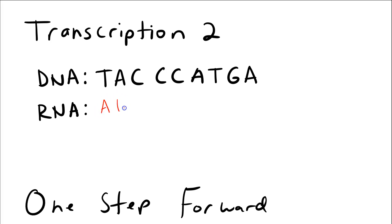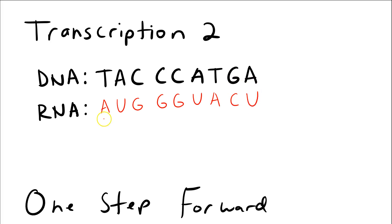Continuing through the sequence: A pairs with U, C pairs with G, C with G, C with G, A with U, T with A, G with C, and A with U. So your RNA transcript here in red would be A, U, G, G, G, U, A, C, U.